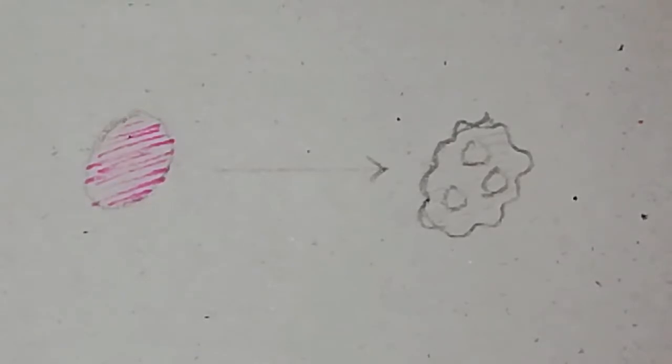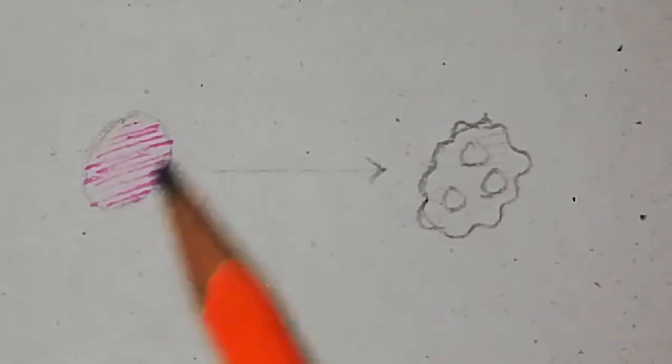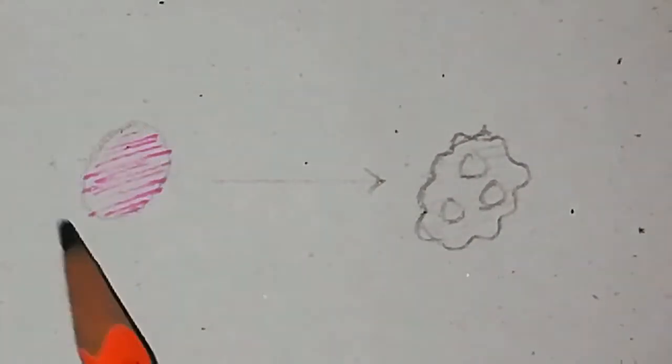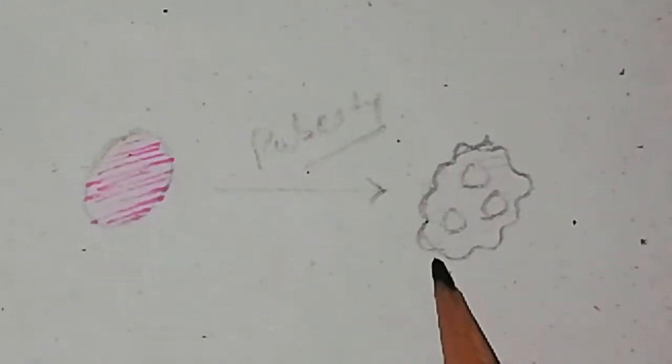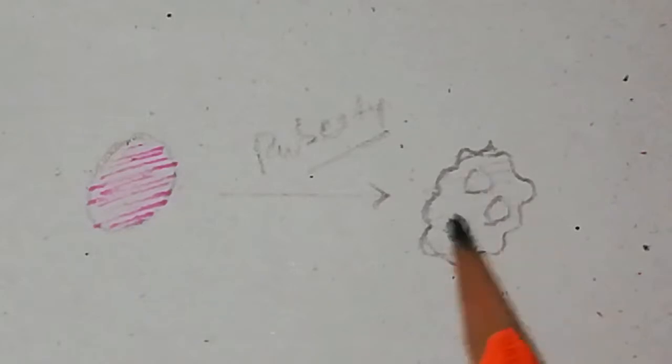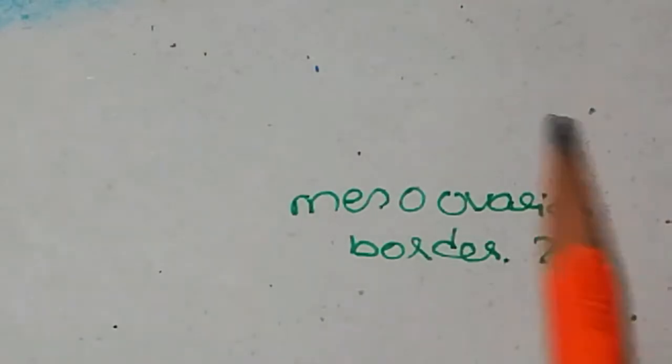Regarding the surface of the ovary: before puberty, the ovaries are pink in color and smooth. After puberty, the surface becomes irregular, uneven, and turns gray in color. These are features of the ovary's surface related to different stages of the female's life.